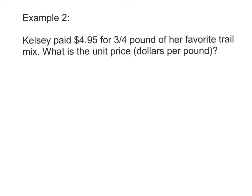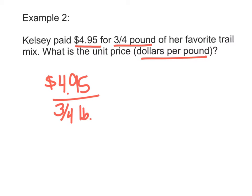Our second example tells us that Kelsey paid $4.95 for three-fourths of a pound of her favorite trail mix, and we're looking for the unit price, which is also the unit rate. And we want that in dollars per pound. So I'm going to start with writing down what we know: $4.95 for three-fourths of a pound. And we want to know how many dollars for one pound. So I put the x in my proportion for the unknown. And then I cross multiply.